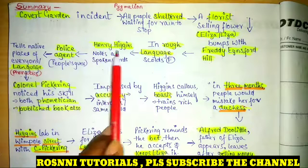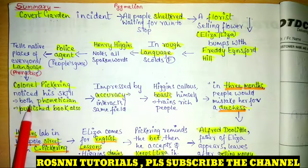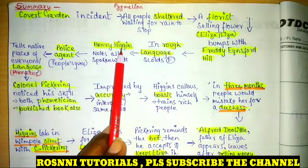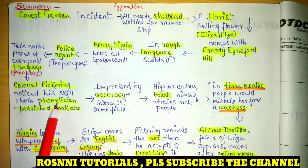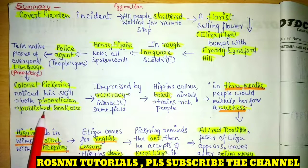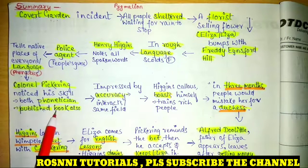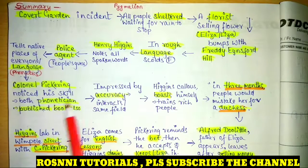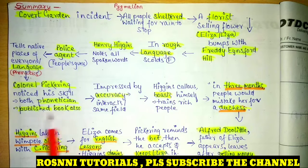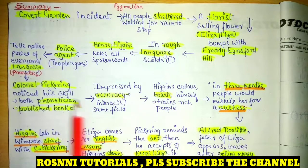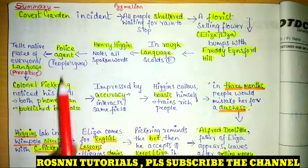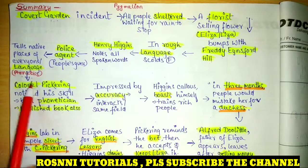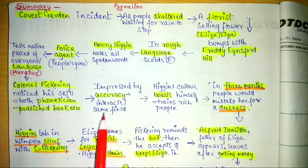Colonel Pickering noticed where people had gathered and how Higgins was able to tell their location. It turned out that even he was a phonetician. After conversing with Henry Higgins, they found that both of them were phoneticians and both had published books which they had each read — they did not know each other, but on that rainy day they came across one another.